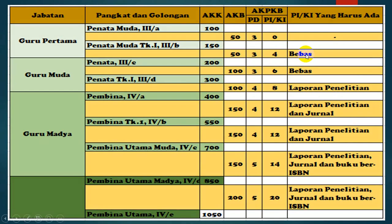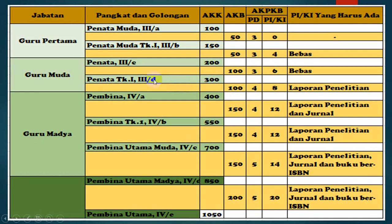PIKI yang bebas ini bisa berupa tinjauan ilmiah, menulis di koran, atau membuat best practice yang cukup disimpan di sekolah. Jadi tidak harus penelitian, misalkan tidak harus PTK. Kemudian dari 3C ke 3D dibutuhkan AKB 100, yaitu dari 200 ke 300 dibutuhkan 100 AK. Dari 100 ini dibutuhkan PD sebanyak 3 dan PIKI sebanyak 6, ini juga bebas.